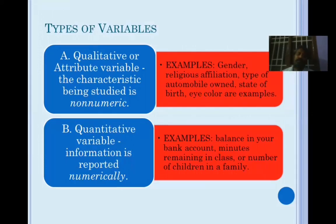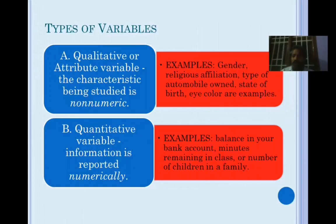The first thing you need to understand is the types of variables. A variable is something which varies from respondent to respondent — it is essentially the questions. If you have 40 questions in your questionnaire, there are 40 variables. These variables can be either qualitative or quantitative. Quantitative variables are measured in numbers — money spent, hours on the internet, savings. Qualitative variables are things like eye color, religious affiliation, gender, or nativity.